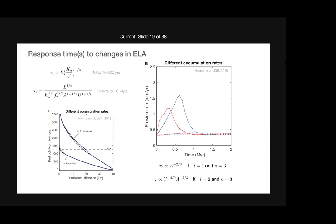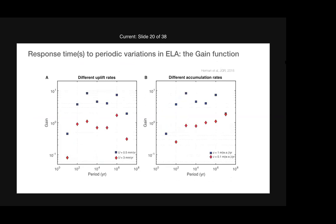The key thing to remember: the erosional timescale scales as accumulation rate to the minus two-thirds, and in the case where l equals 2, it also scales with the inverse of the uplift rate. With Frédéric Herman and Erik Deal, we ran many models to find what we call the gain function. We force the system with a periodic signal in ELA at various periods, and for each period we look at how much the sedimentary flux changes. No gain means changing climate doesn't change flux; gain of 1 means a 10% climate change produces 10% flux change.